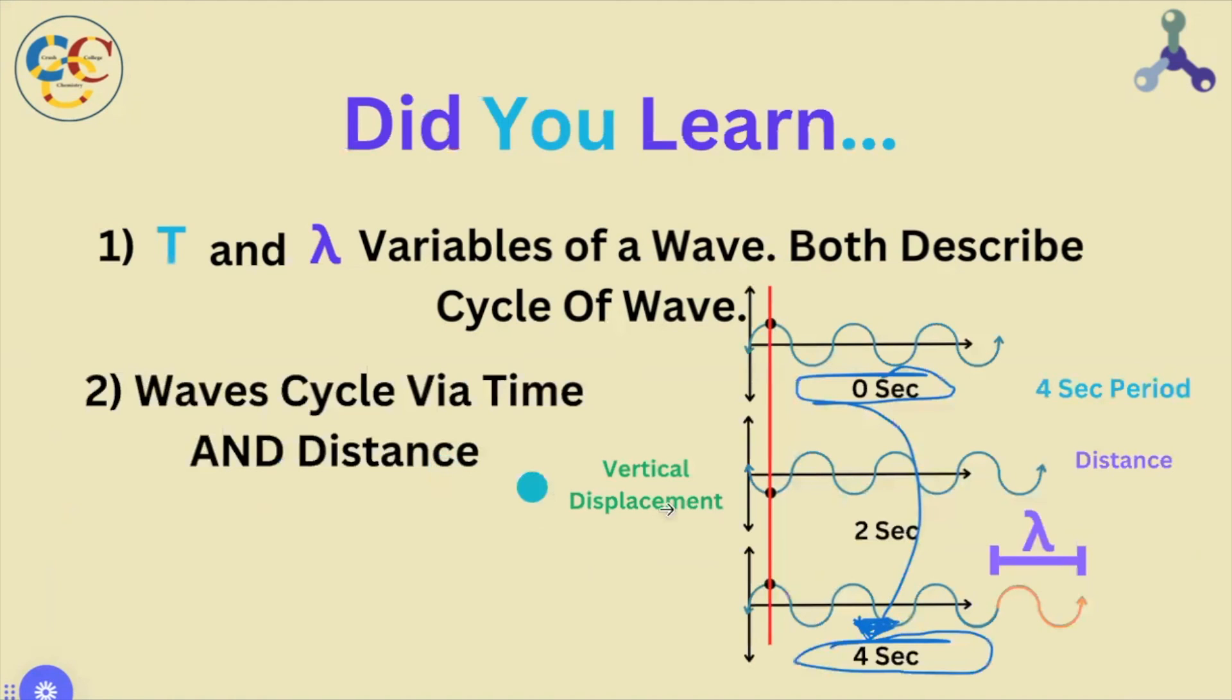A wave is bound by time and space simultaneously, and that explains our multivariable definition of a cycle.